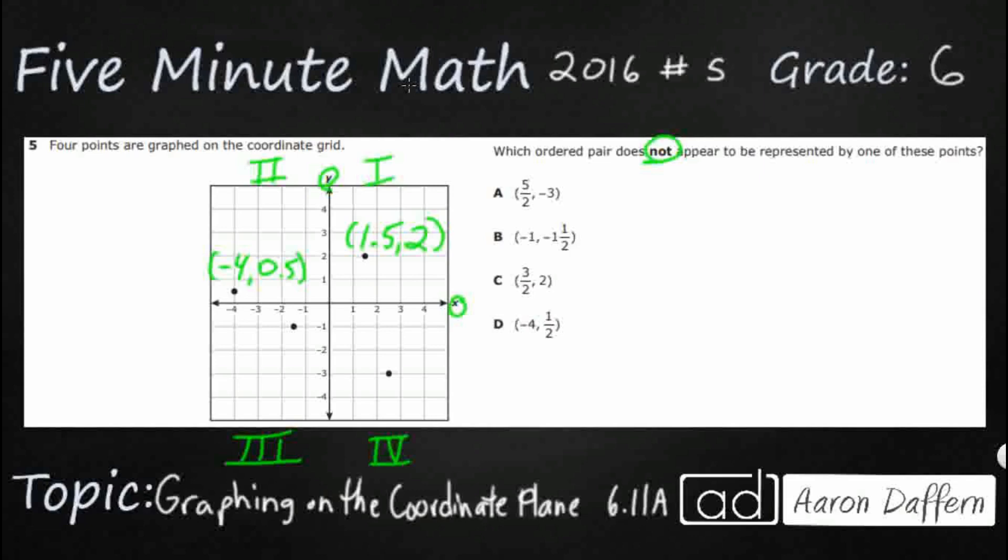Now this quadrant three point here, if we look at our x axis right between the negative one, negative two, it looks like it's about negative 1.5 for the x coordinate. The y coordinate is just going to be a negative one, but you notice how on our quadrant three, both x and y are negative.